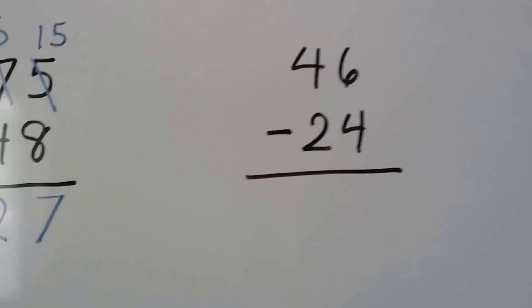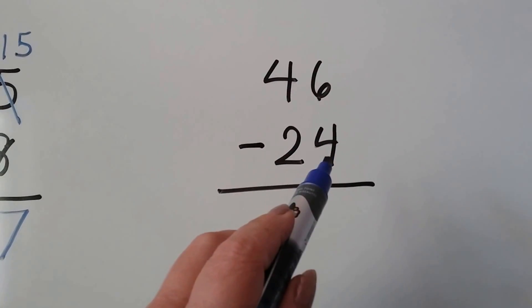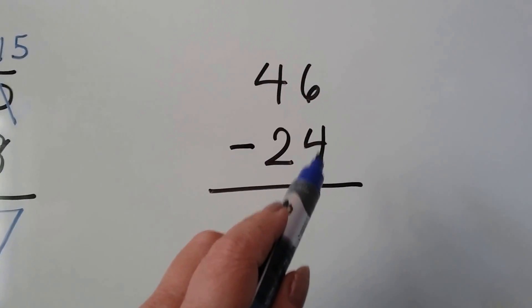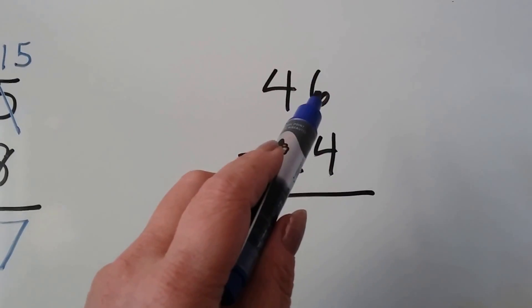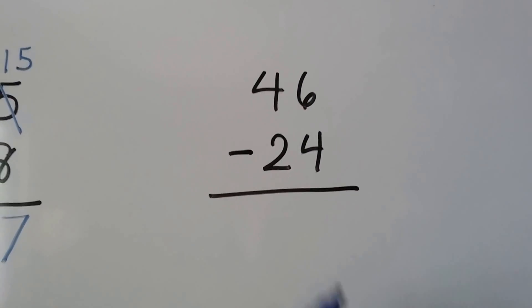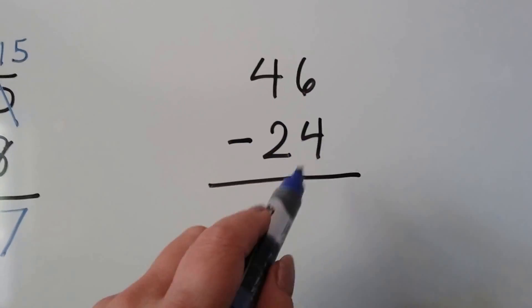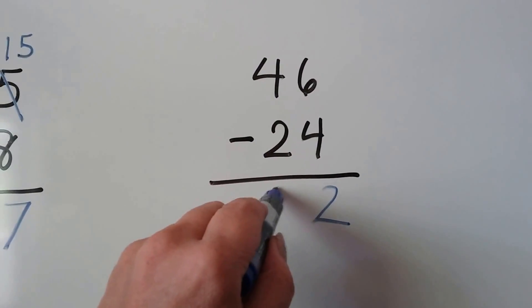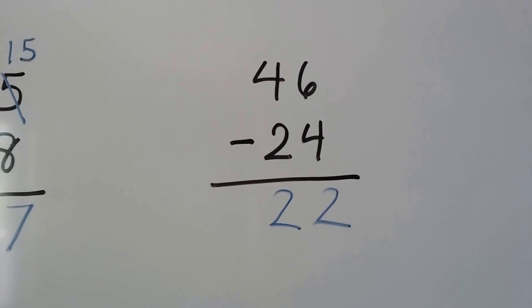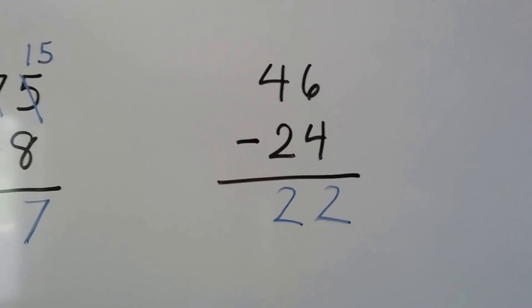Do it again. We have 46 minus 24. We look at the ones place in the subtrahend. It's a 4. We compare it to the ones place of the minuend. That's a 6. That's larger. So we don't need to regroup. This one's smaller. 6 minus 4 is 2. And 4 minus 2 is 2. We get a 22, and we didn't need to regroup because that 4 was smaller than the 6.